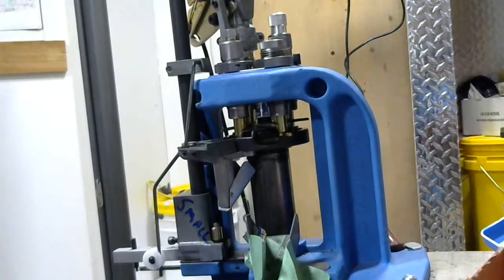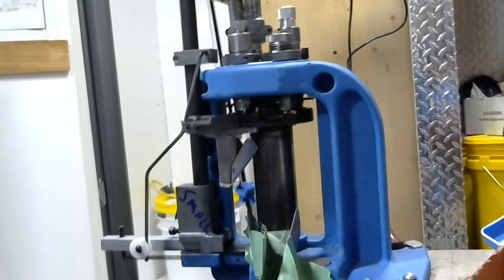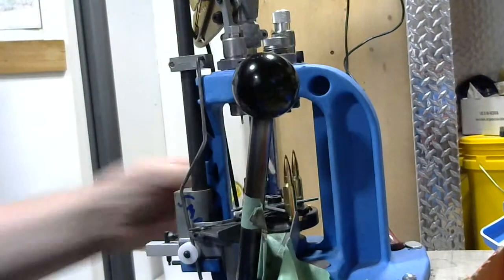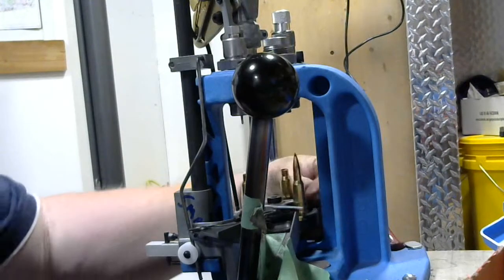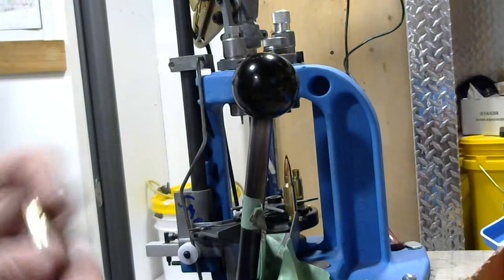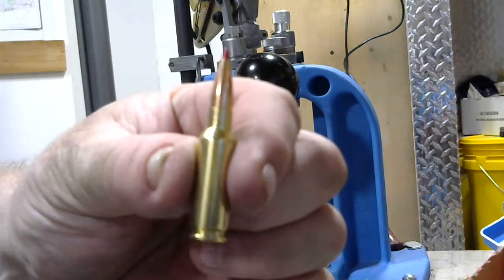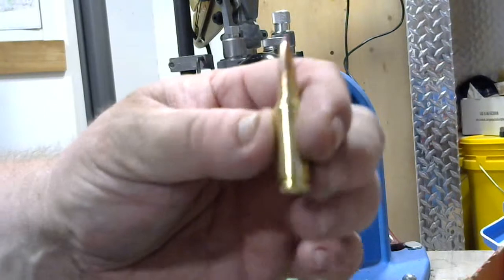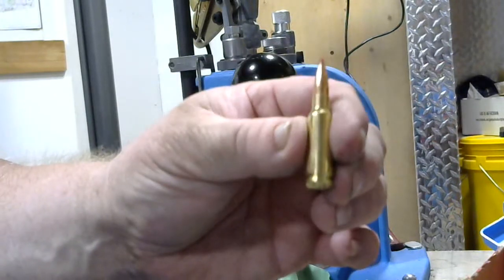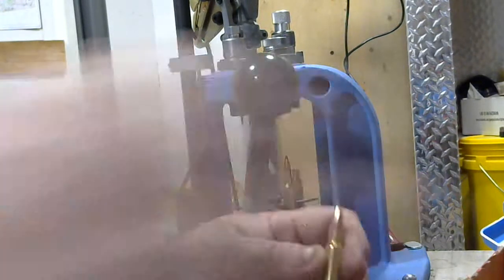We're going at slow speed so I can ensure that all these stages are being done correctly. And there it is, the first 6.5 Grendel round off the production line.